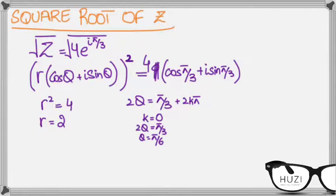So one root will be 2e to the power i pi by 6. And now the other root, where k equals 1.